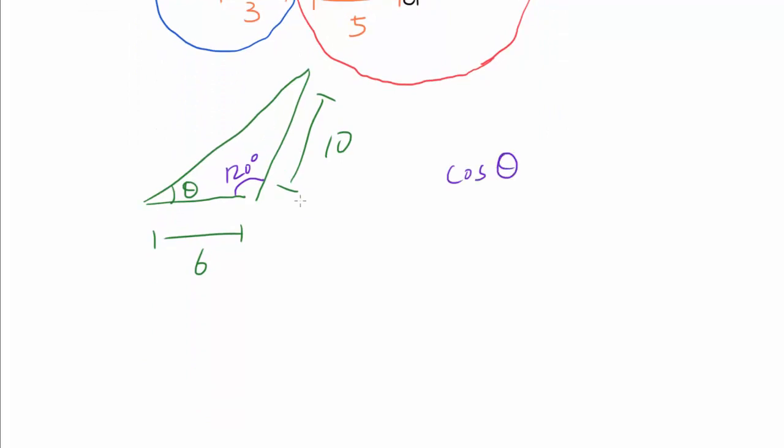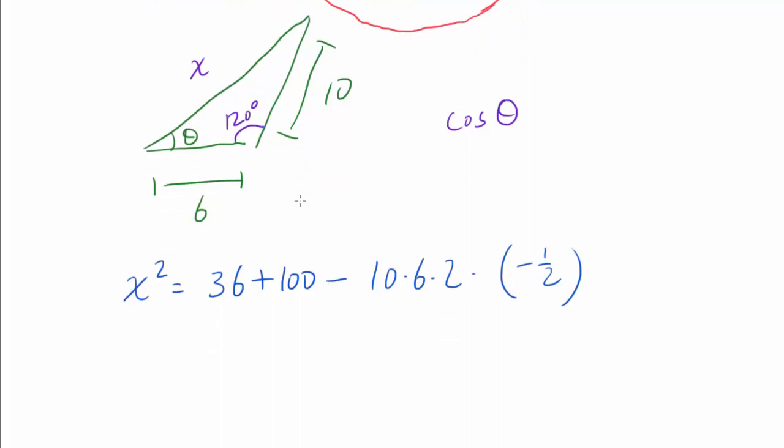From here, it's a routine exercise to find cosine of theta. Letting this side be X and applying law of cosines, we get X squared is 36 plus 100 minus 10 times 6 times 2 times cosine of 120, or negative 1 half. I'm just applying law of cosine, looking at X and 120 degrees as the opposite side and angle. And this thing is going to get us 136. The 2's are going to cancel out. Plus 60, also known as 196, which is telling us X is 14. Square root of 196 is 14.